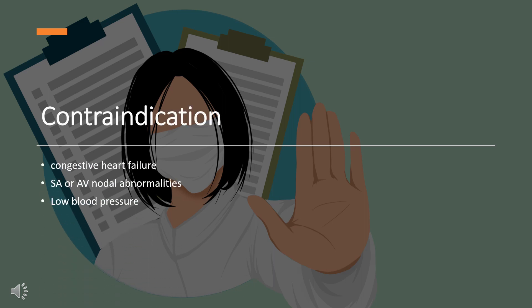Contraindication: In congestive heart failure, patients with reduced ventricular function may not be able to counteract the negative inotropic and chronotropic effects of diltiazem, the result being an even higher compromise of function. With SA node or AV conduction disturbances, the use of diltiazem should be avoided in patients with SA or AV nodal abnormalities, because of its negative chronotropic and dromotropic effects.